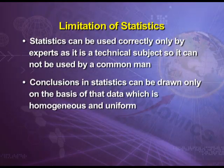The next limitation is that conclusions in statistics can be drawn only on the basis of data which is homogenous and uniform. For example, if we have to obtain average marks of students, then all students should be of the same stream or same class — like all must be of 11th class, all must be of commerce, science, or arts. Otherwise, the conclusion drawn will be wrong.